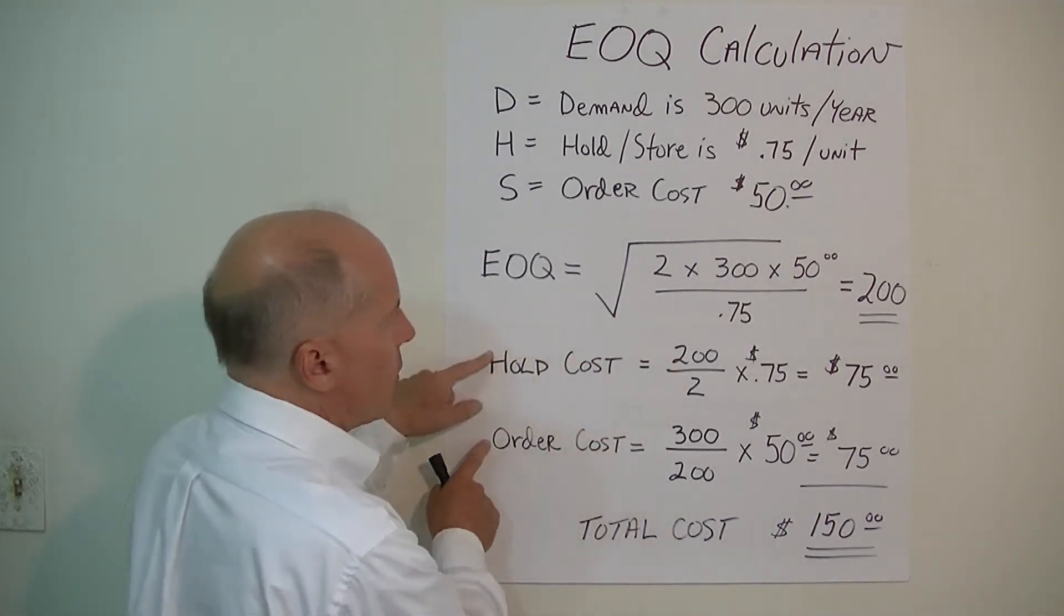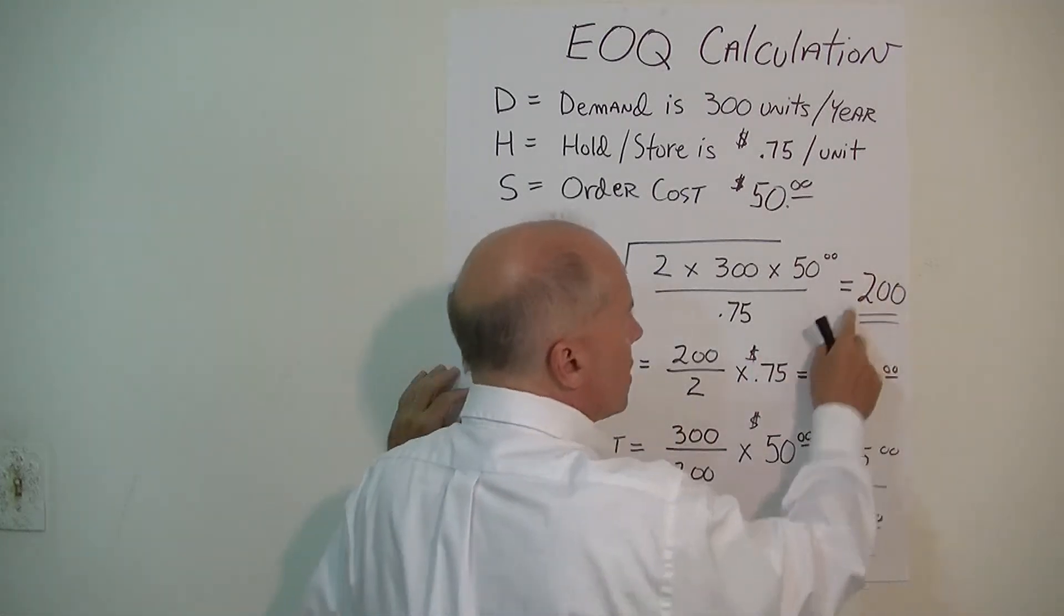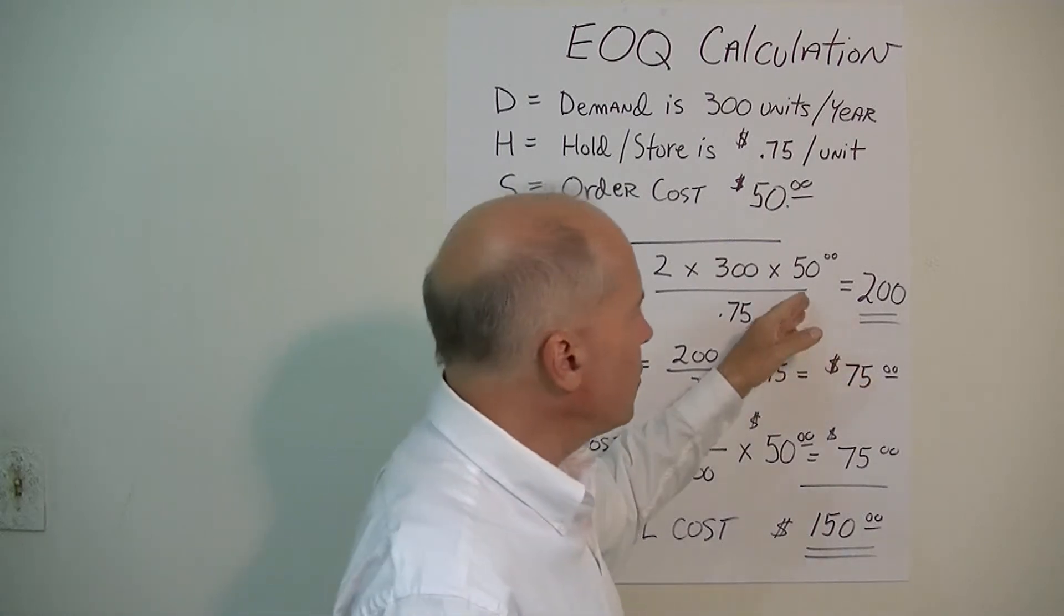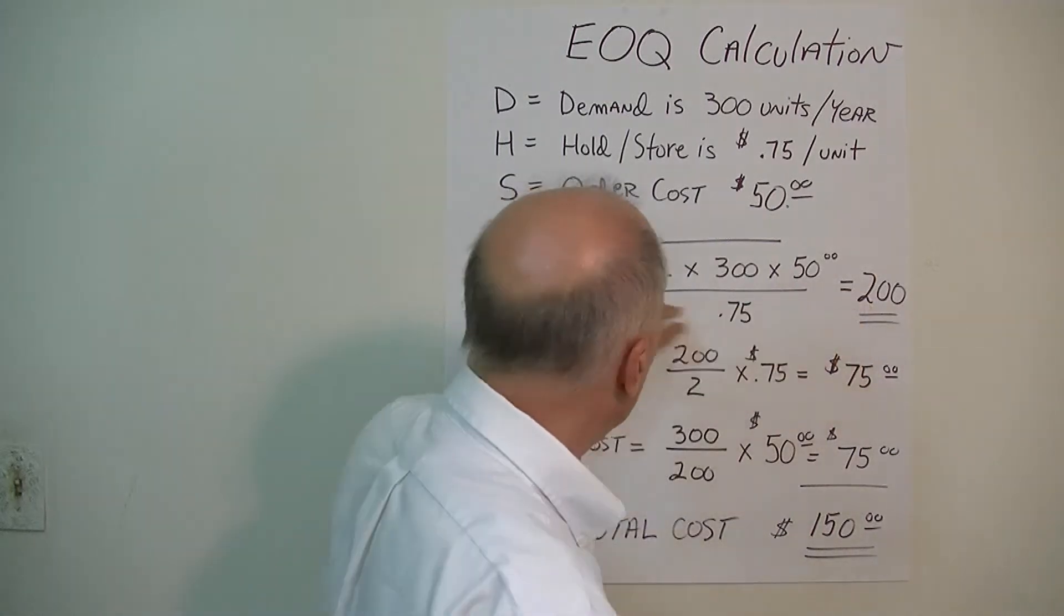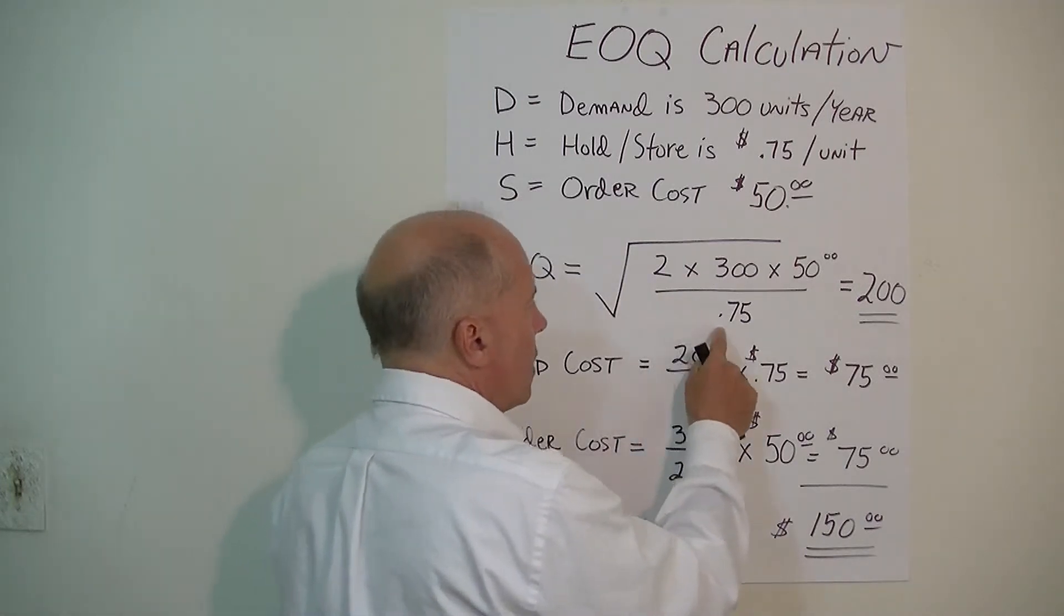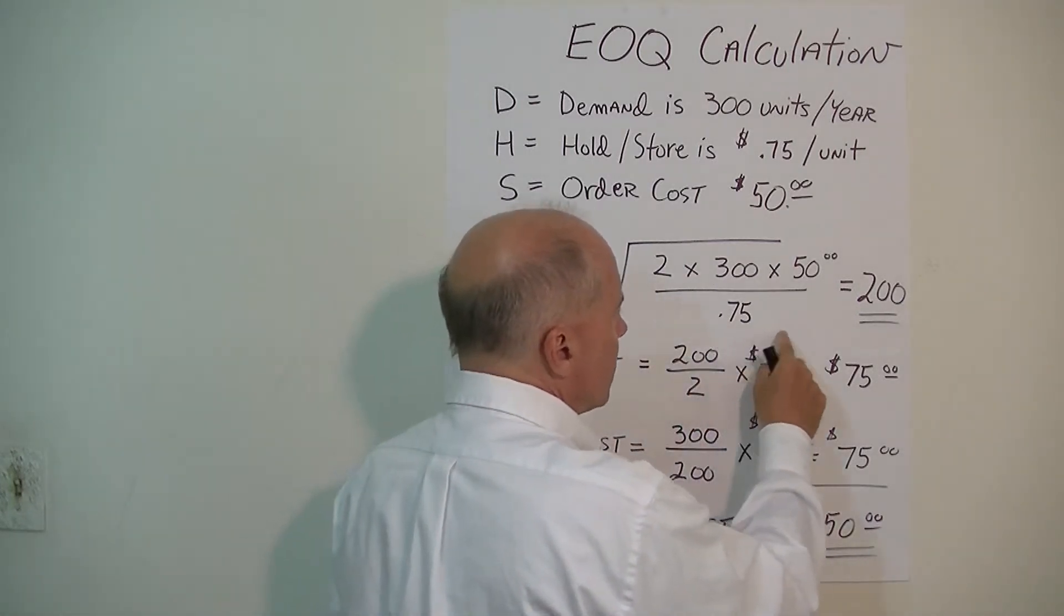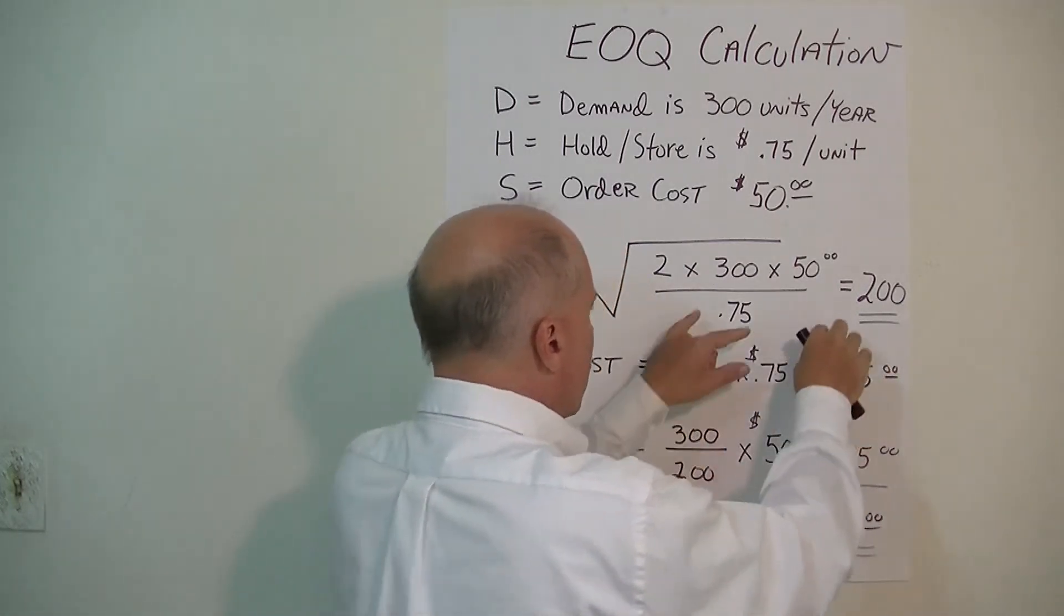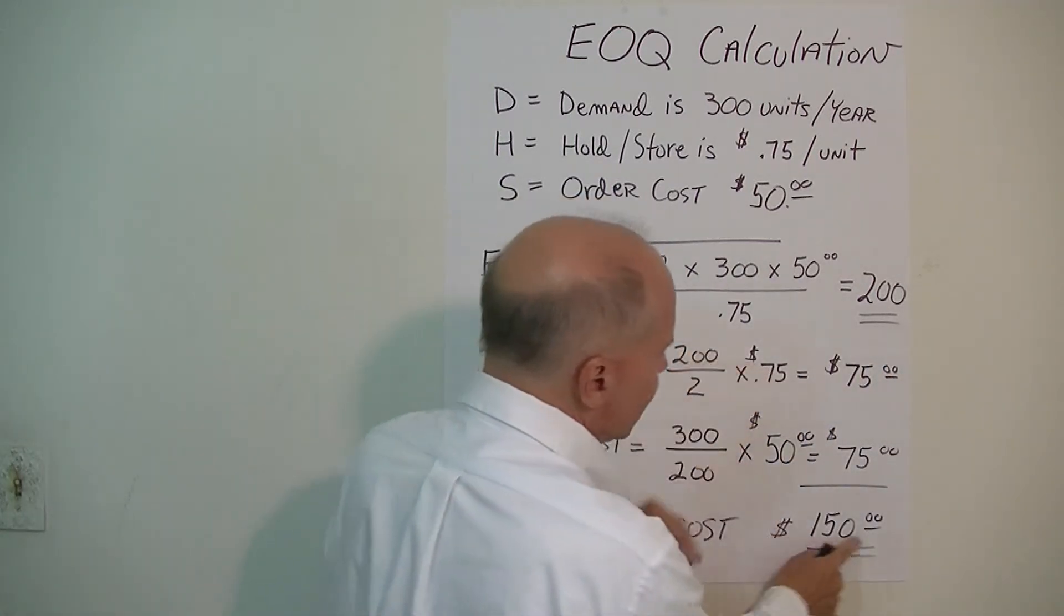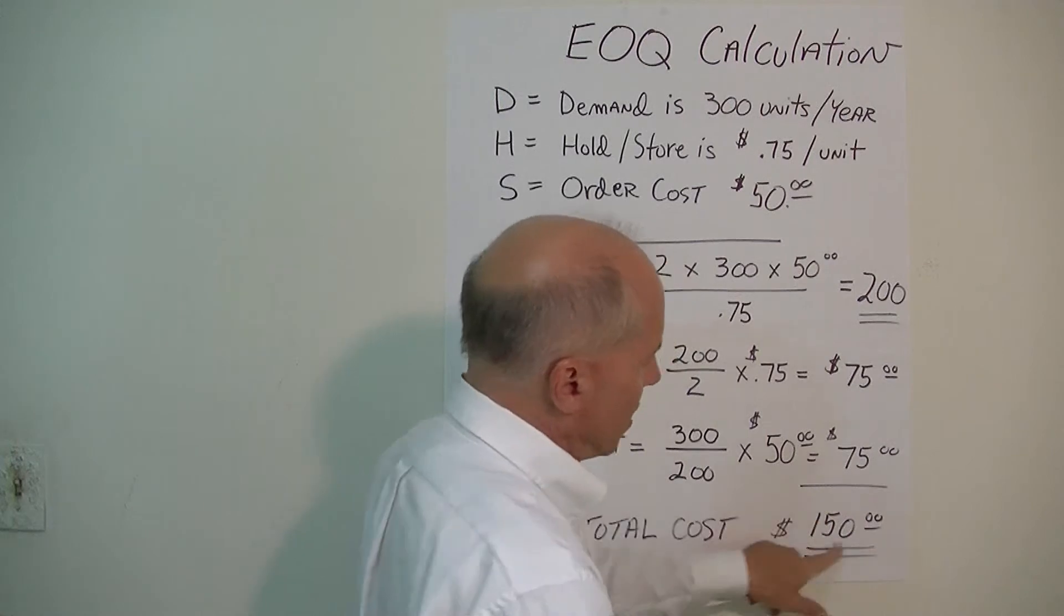Once you figure these out, set up a table and put in different ranges of the order quantity: maybe 50, 100, 250, 300, 350. Plug that in at the top. Plug these into your formula and see where you minimize this number.